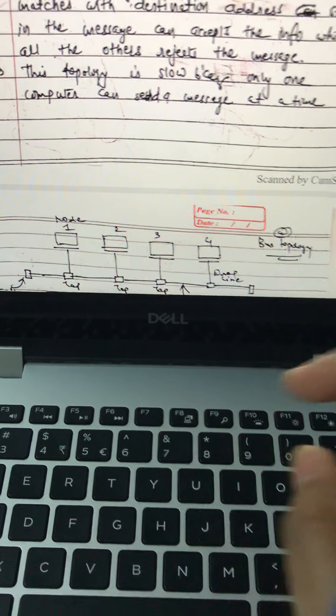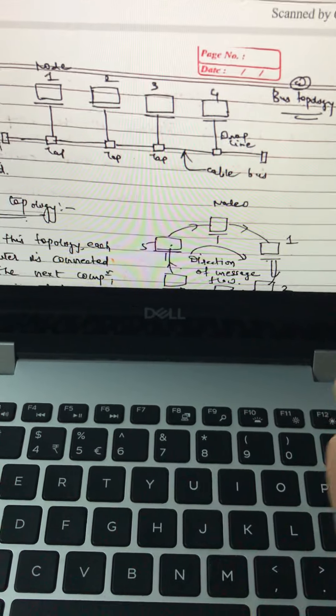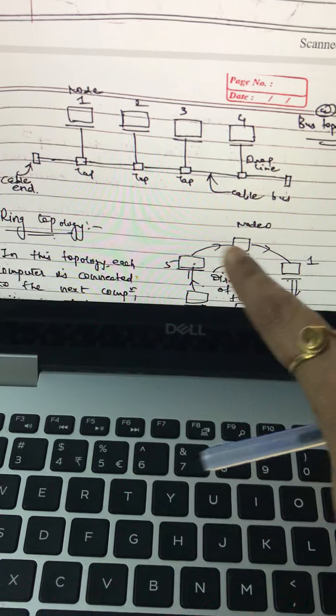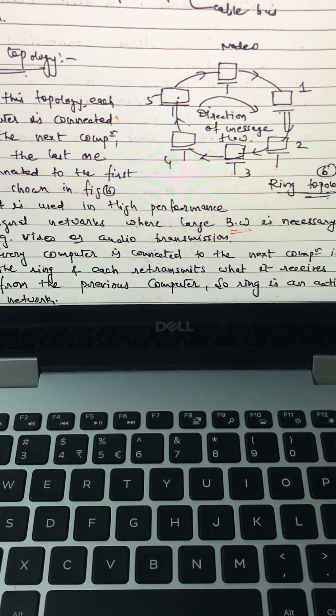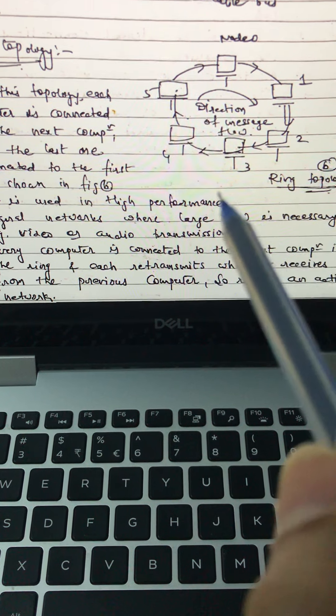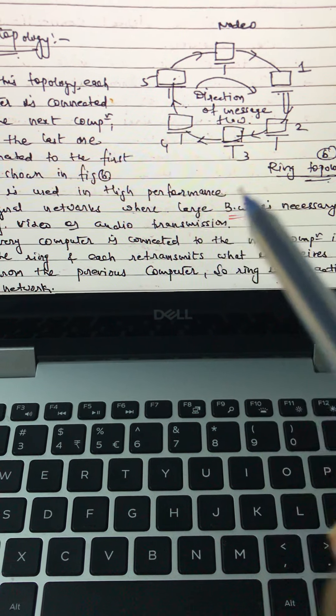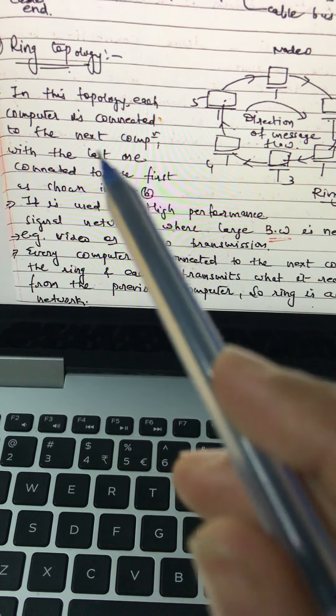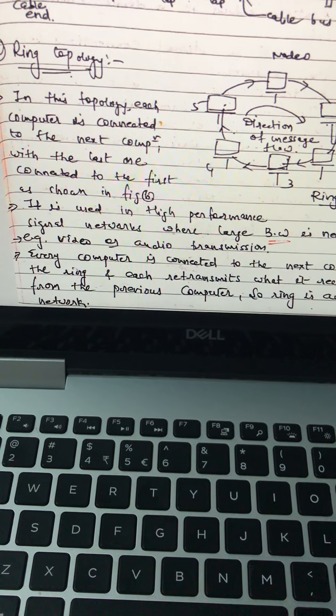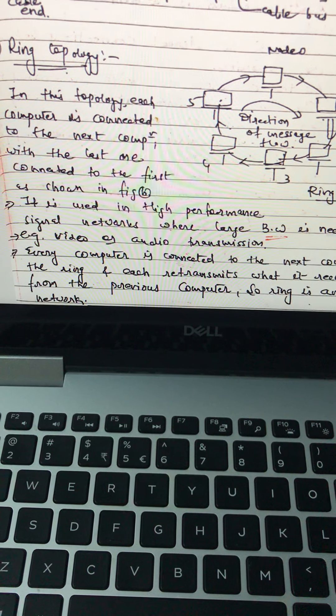Second is ring topology. Ring topology is in the form of a ring. So all nodes are connected to two other nodes with the help of its starting and ending. In this topology, each computer is connected to the next computer with the last one connected to the first one.